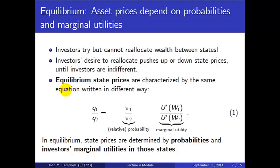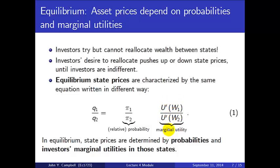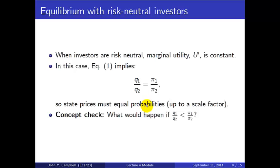In this equilibrium, state prices are still characterized by the same first-order condition, rewritten as: q1/q2 = (π1/π2)·[u′(W1)/u′(W2)]. In equilibrium, state prices are determined by probabilities and investors' marginal utilities in each state. There is a special case in which investors are risk neutral: marginal utility u′ is constant, so the ratio of marginal utilities cancels, and state prices must be proportional to probabilities — q1/q2 = π1/π2.